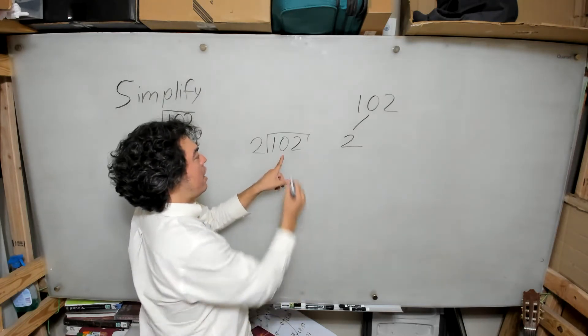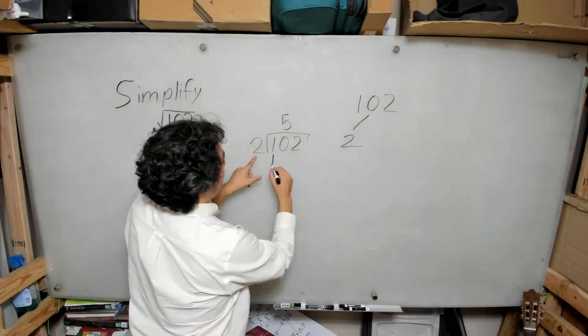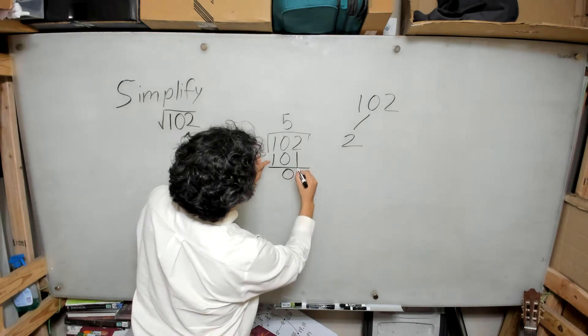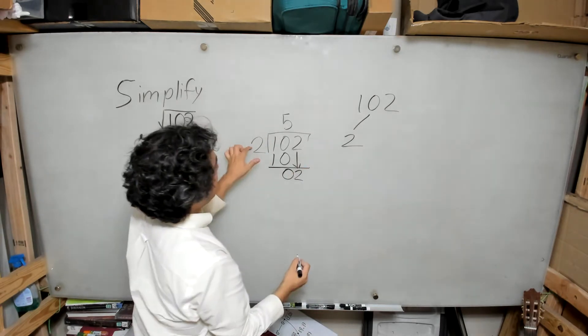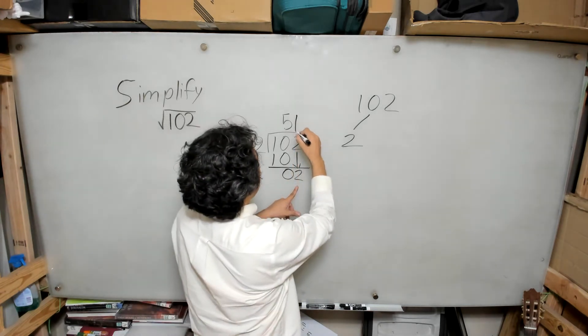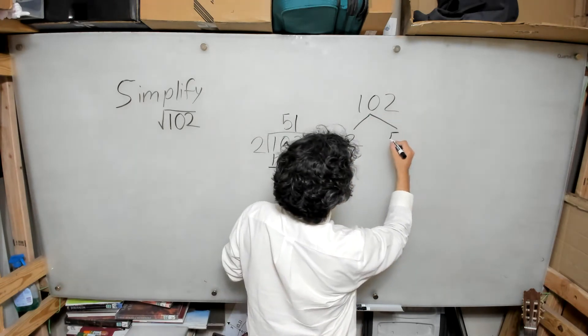2 goes into 10, five times because 5 times 2 is 10. I can see that 10 minus 10 is 0. I bring down my 2 and I ask myself how many times does 2 go into 2? It goes in one time, and so I see that 102 is the same thing as 2 times 51.